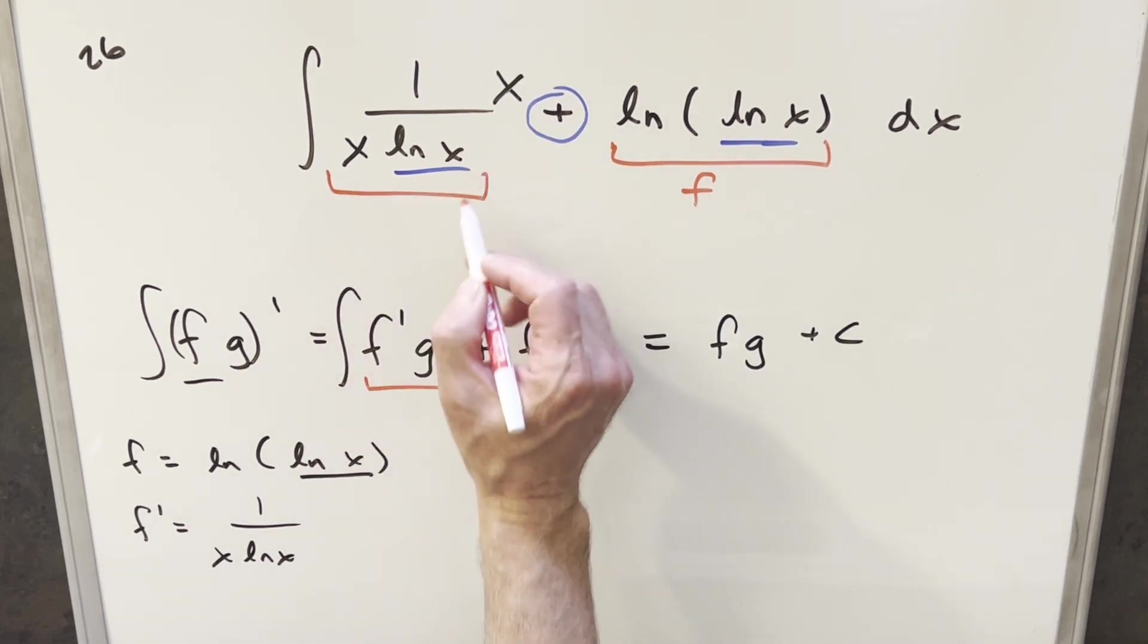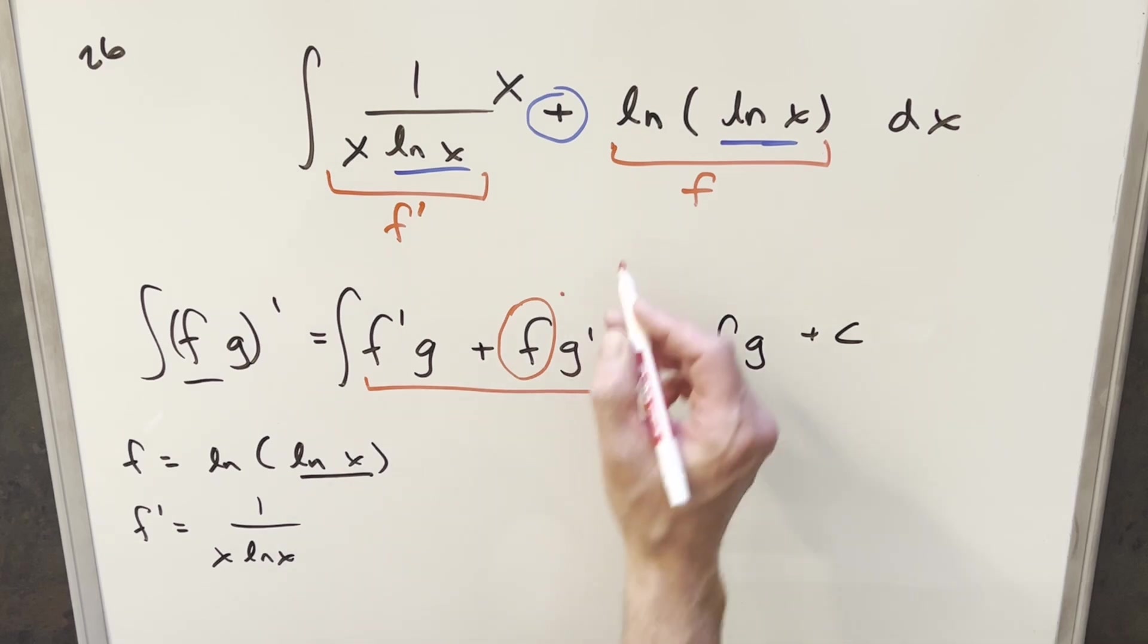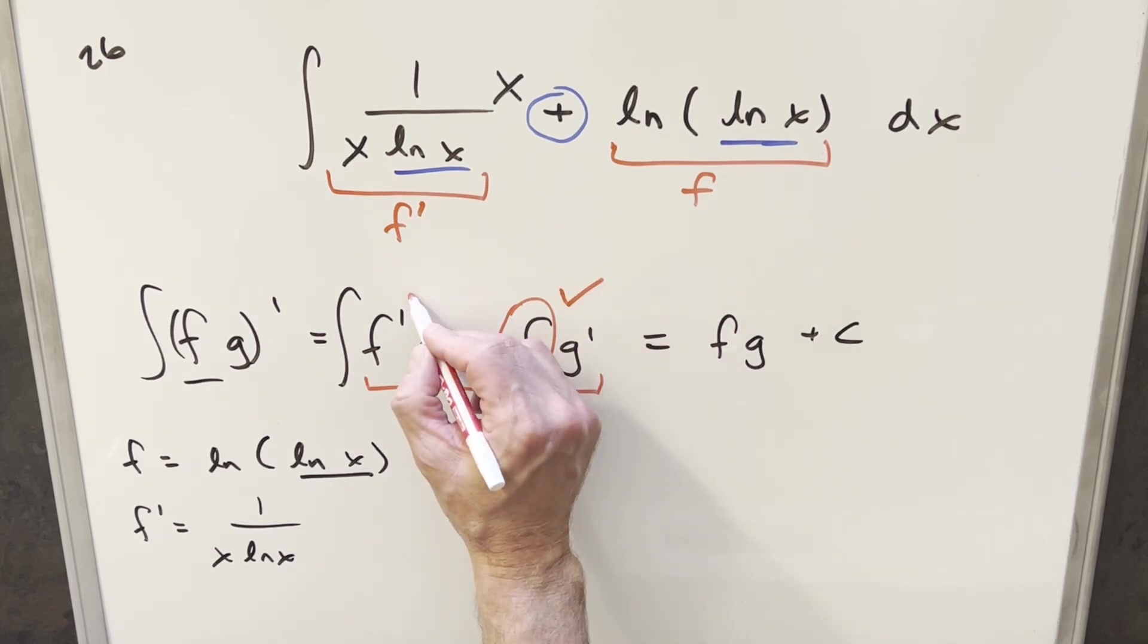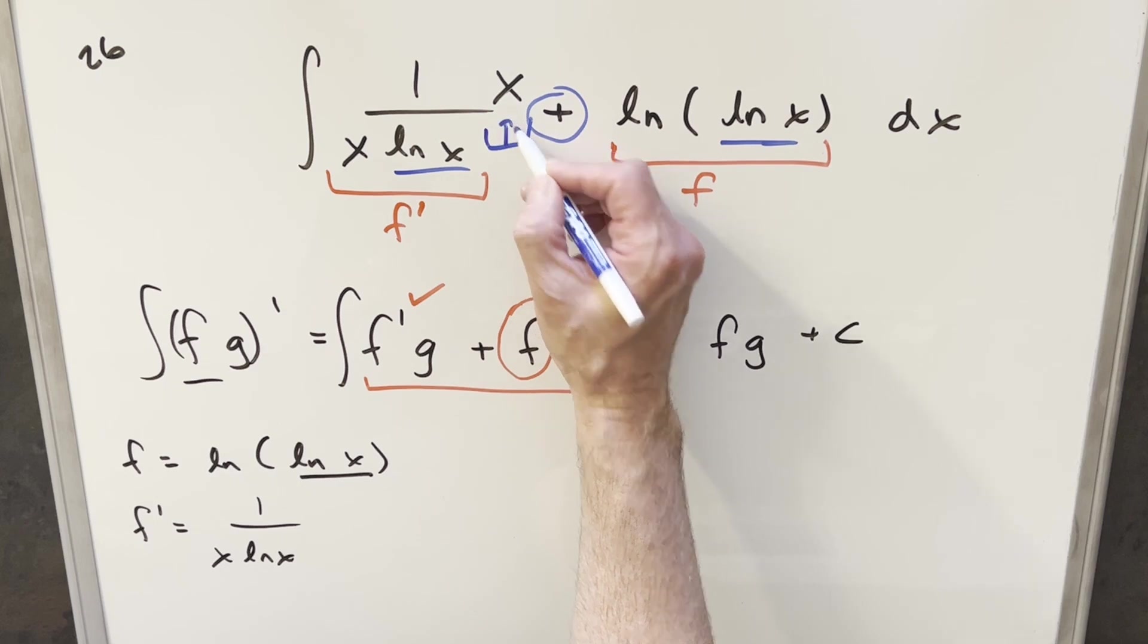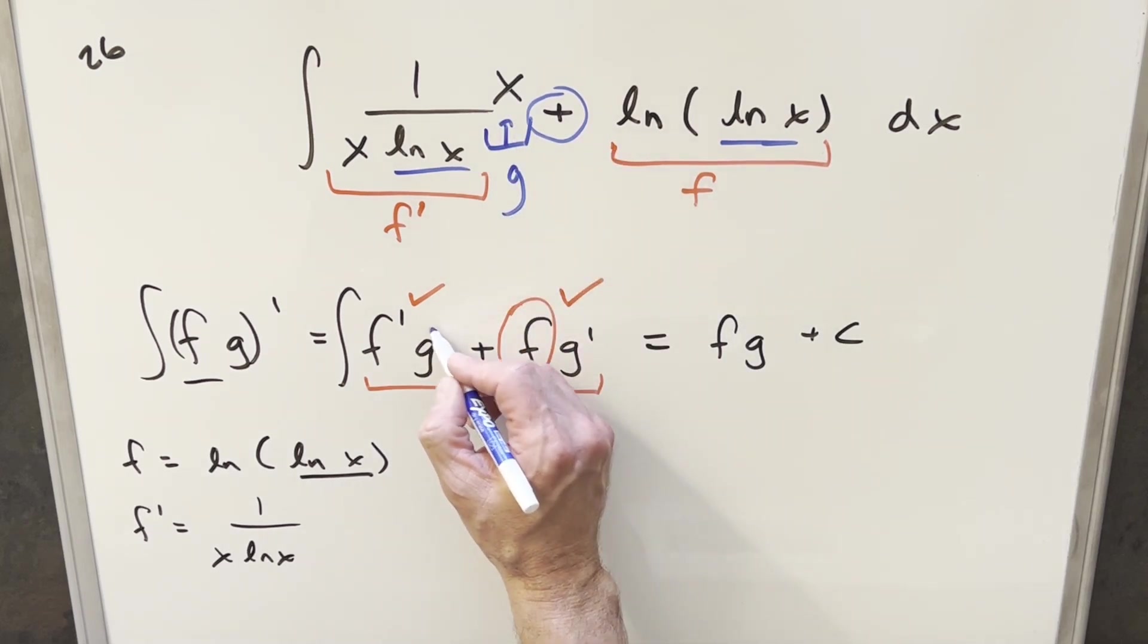By doing that now, over here we have our f prime. So we're doing good here with this, and we're doing good here with this. But now in order for this to work, we've got this x right here. We need this here. This needs to be our g value right here.